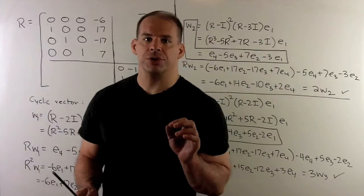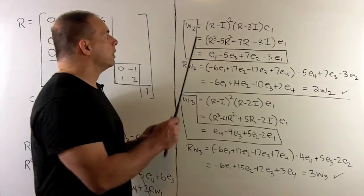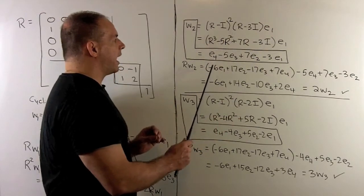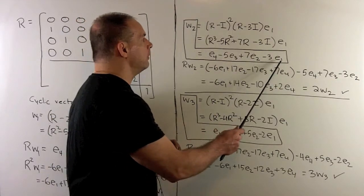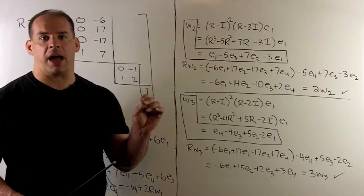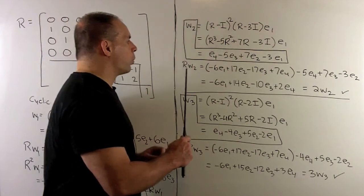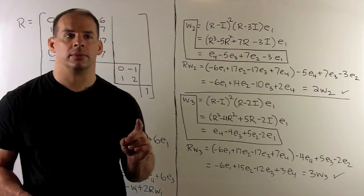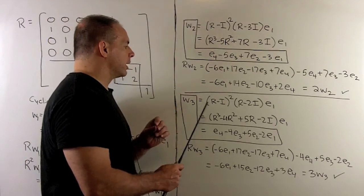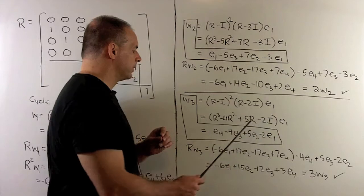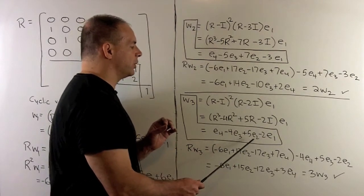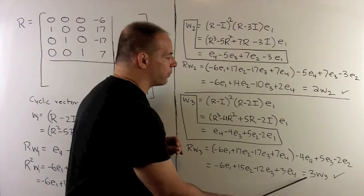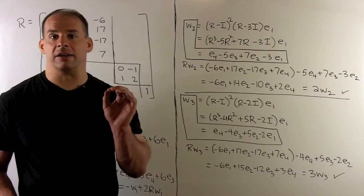Looking for our eigenvectors: for eigenvalue 2, we apply the other factors — (λ−1)²(λ−3) — to E_1, giving W_2 = E_4 − 5E_3 + 7E_2 − 3E_1. Applying A to W_2 gives 2W_2, verifying the eigenvalue 2 property. For eigenvalue 3, we apply (λ−1)²(λ−2) to E_1, giving W_3 = E_4 − 4E_3 + 5E_2 − 2E_1. Applying A to W_3 gives 3W_3, verifying the eigenvalue 3 property.